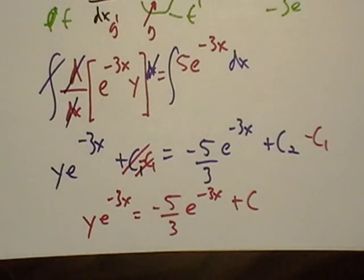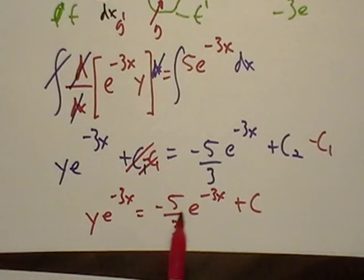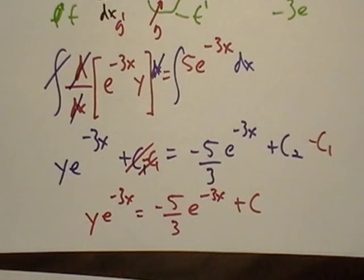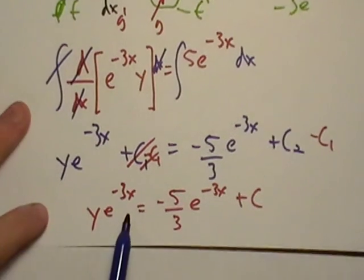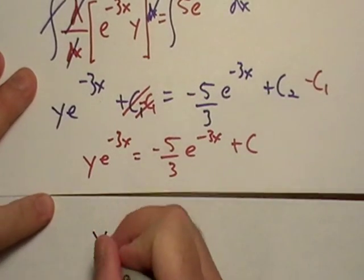It's going to need another piece of paper. So now we have y, we have some junk on the right, all we have to do is divide this e to the negative three x out and we're there. If I divide everything in this equation by e to the negative three x, I'm left with...